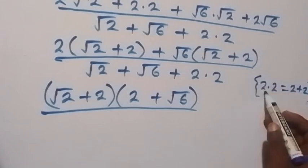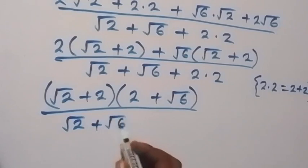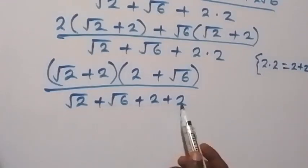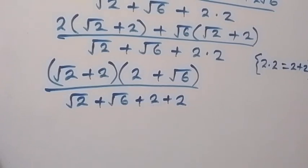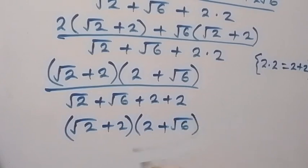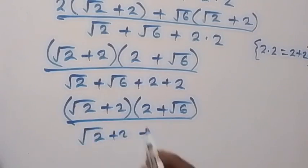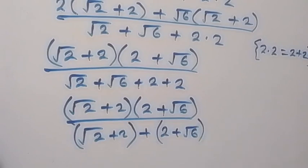Now let's replace 2 times 2 as 2 plus 2. The numerator becomes (root 2 plus 2) times (2 plus root 6), and we can equally arrange the denominator as root 2 plus 2 plus root 6 plus root 2, which we can write as (root 2 plus 2) plus (2 plus root 6) and group them together.